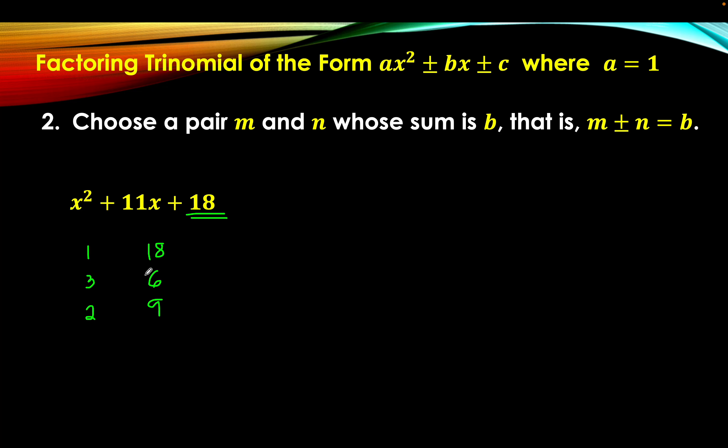From the list of possible pairs, we're going to choose two numbers such that m plus or minus n equals b — when the two numbers are added or subtracted, the result is b. Remember that when c is positive, the two numbers are either both positive or both negative, and the sign of the coefficient of the middle term tells whether the signs are positive or negative. For our trinomial x squared plus 11x plus 18, c is positive 18, which gives us the clue that the factors are either both positive or both negative.